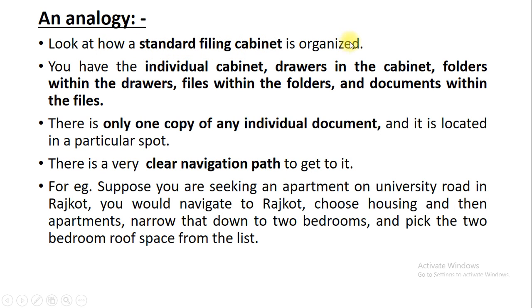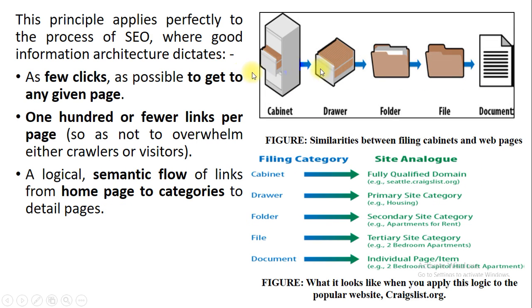Look at how a standard filing cabinet is organized. 'Organized' means it is in a structured format which can be easily navigated and retrieved. You have an individual cabinet; within the cabinet you have drawers, each drawer contains different kinds of folders, inside each folder you have a collection of files, and inside each file there is a specific document which belongs to that particular file.